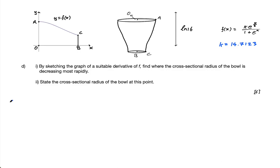So, d part i, you have two options, and that's why it says the graph of a suitable derivative, because you could get the graph of the first derivative and find where that's at a minimum, or you can get the graph of the second derivative and find where that's equal to zero, because that's how you find the point of inflection.